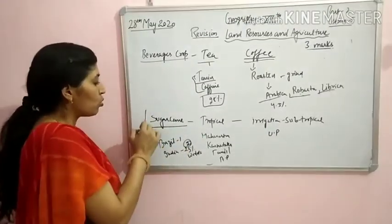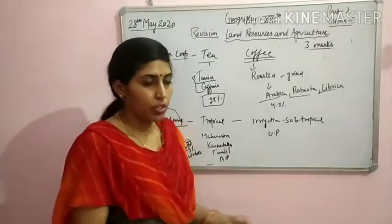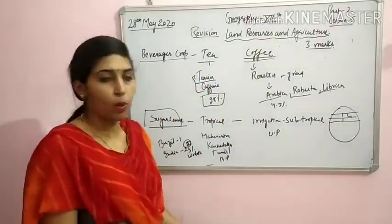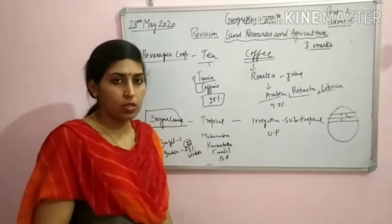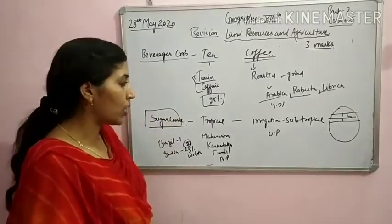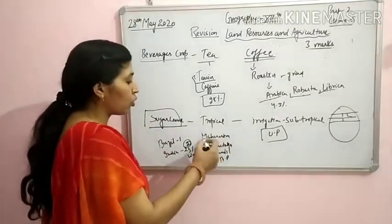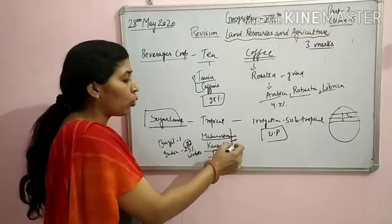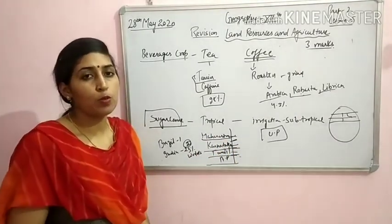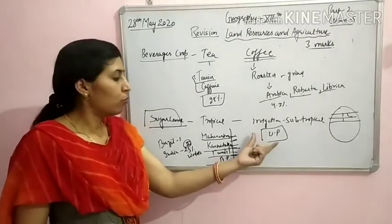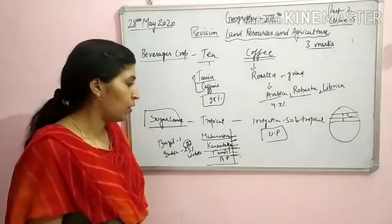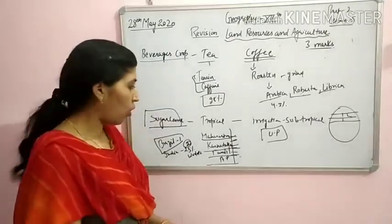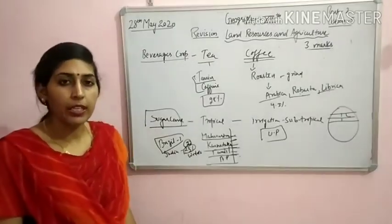Next: sugarcane. Sugarcane is a tropical crop but it also grows in sub-tropical regions. The northern part is sub-tropical and the southern part is tropical — so sugarcane grows in both tropical and sub-tropical regions. UP grows it with irrigation help, and Tamil Nadu and Andhra Pradesh grow it in tropical conditions. Sugarcane requires a humid climate. Brazil has the first rank in sugarcane production, India has the second rank, and India produces 23% of the world's sugarcane.